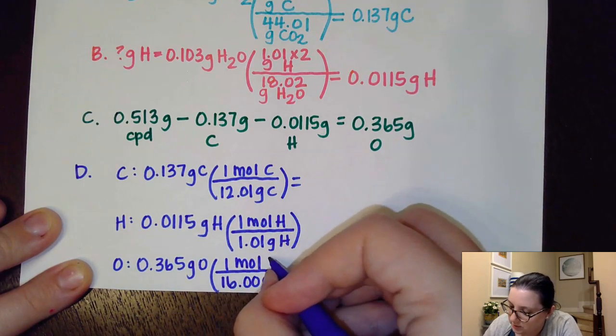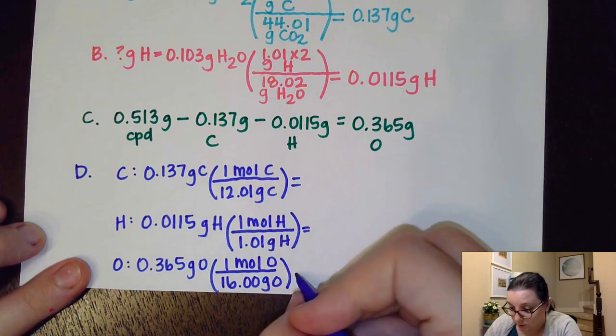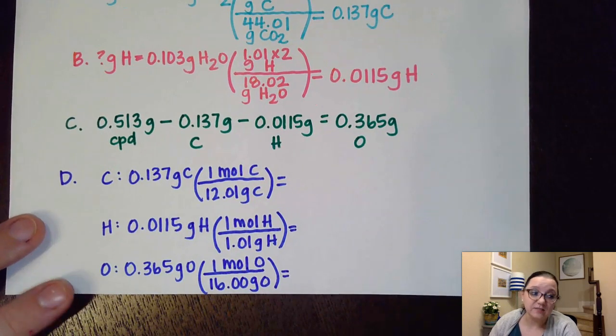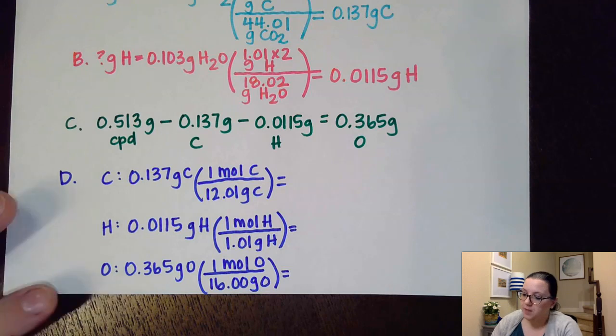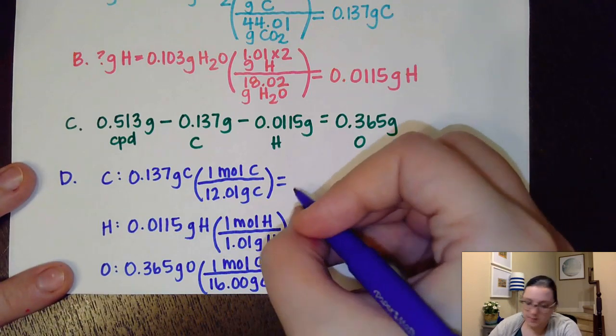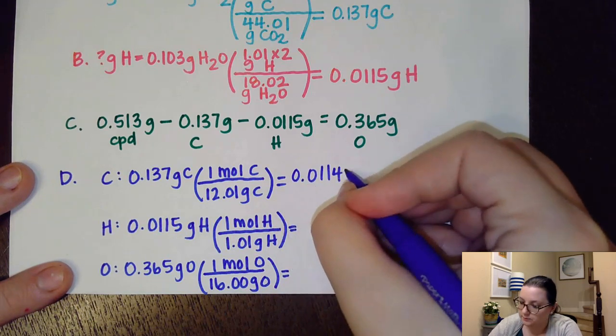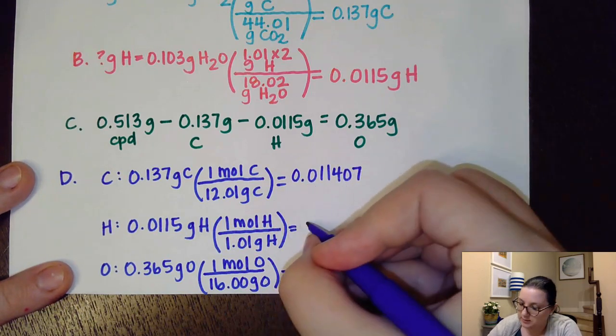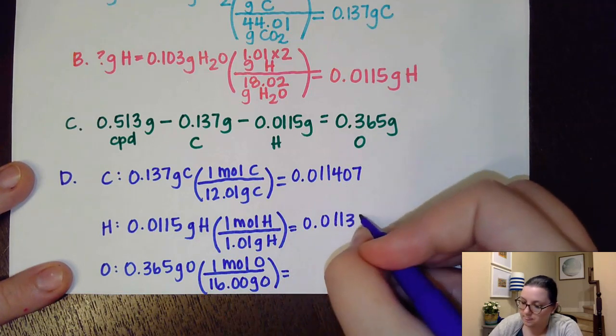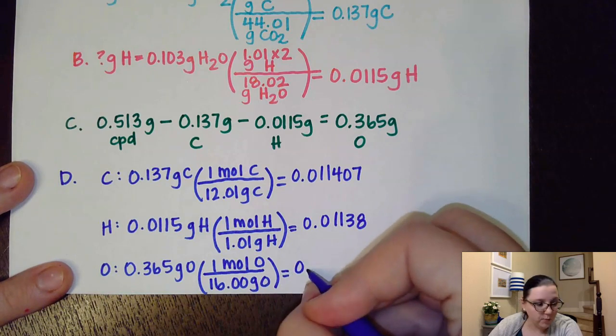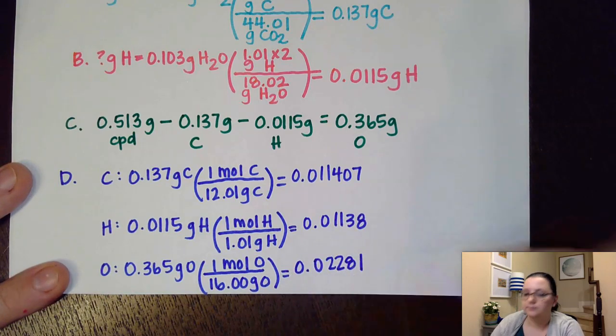And as a reminder on this step, when you do the mass to mole step, don't shortchange yourself on your numbers. You want to show at least four sig figs here, if not more. More never hurts. So my numbers here end up being 0.011407, then 0.01138, and 0.02281.